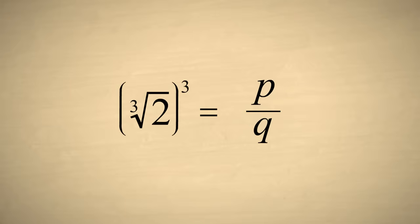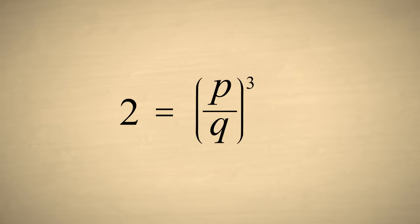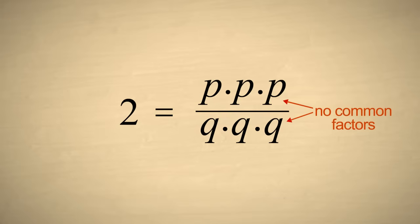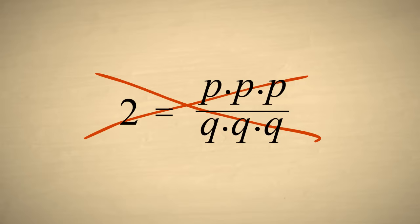Then, cubing both sides, we get two equal to p times p times p over q times q times q, and since p and q have no common factors, the fraction can't be reduced to an integer. And so the cube root of two is also irrational.